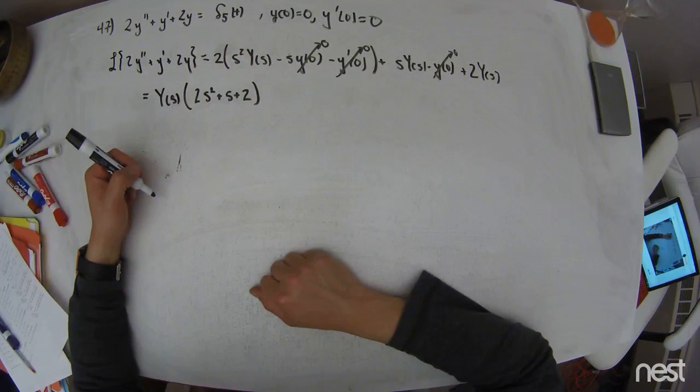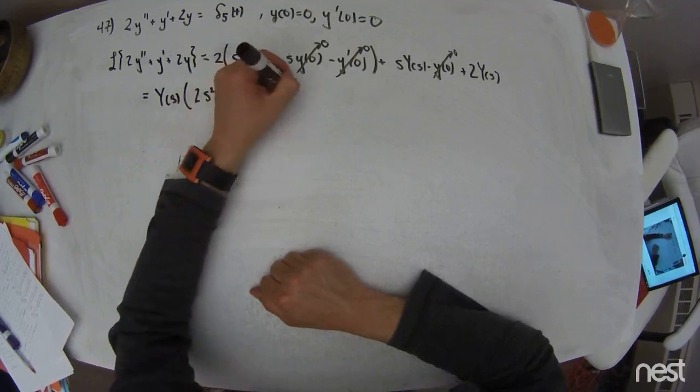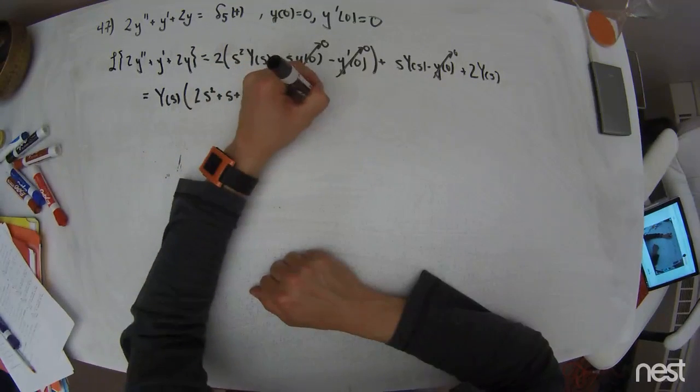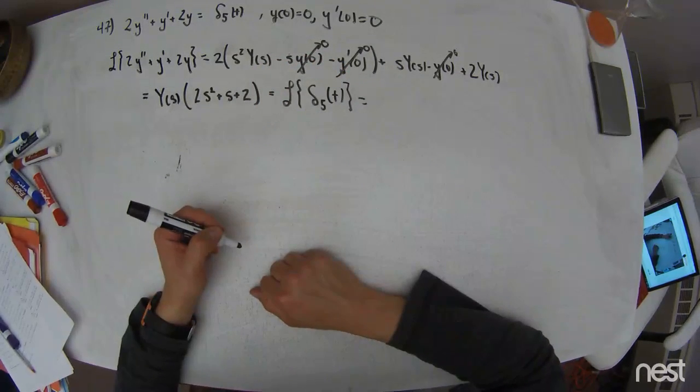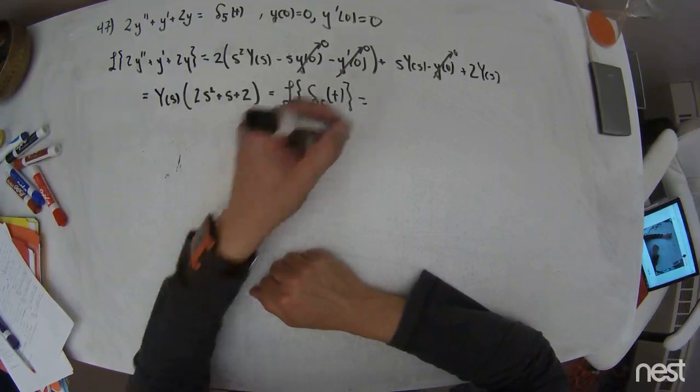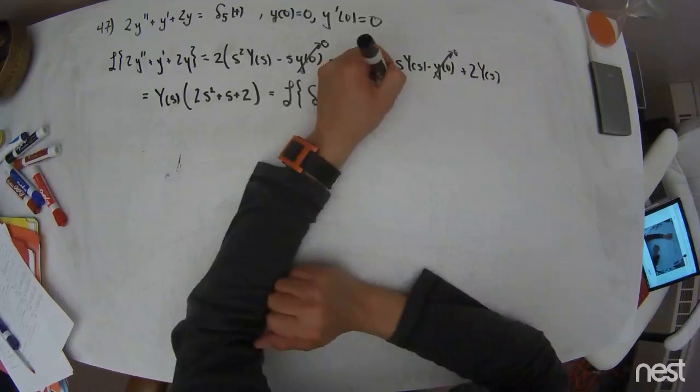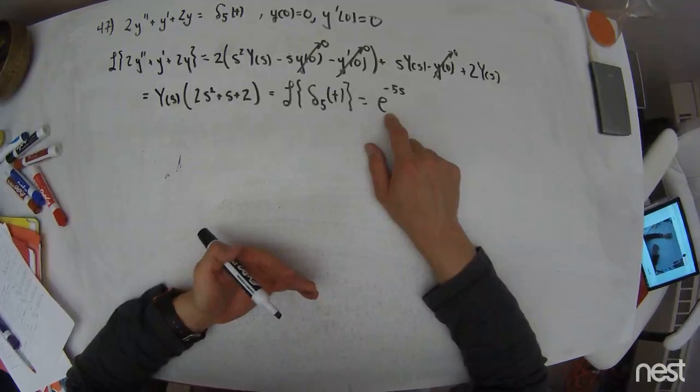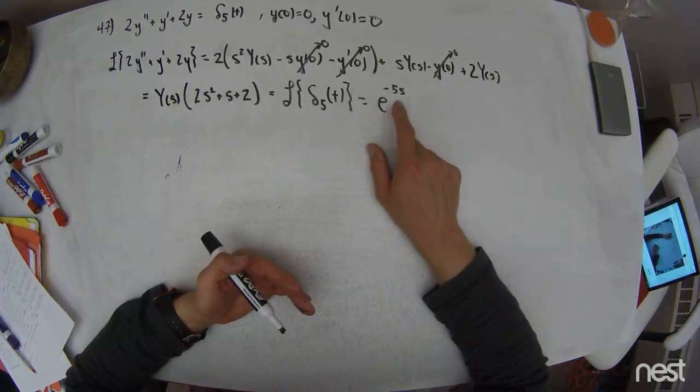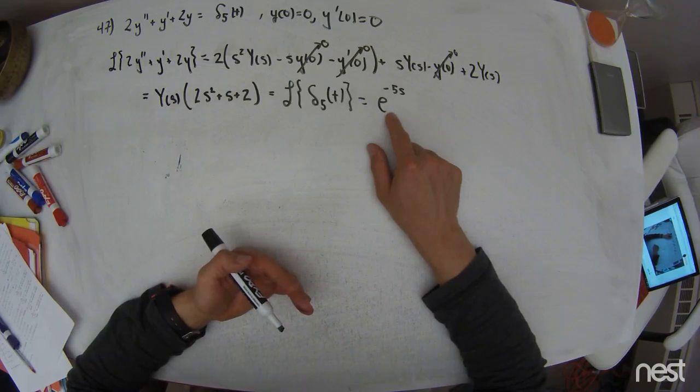That's the left-hand side. On the right-hand side, I take the Laplace transform of this delta function, delta 5t. We look at our transform table. I think that's 19 in there. There's some places e to the negative 5s. What this really represents is that whatever's about to happen now, it's going to happen on a time delay. It's going to happen on a time delay at 5 seconds.